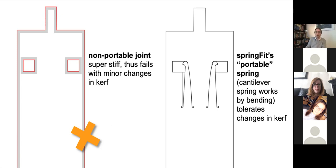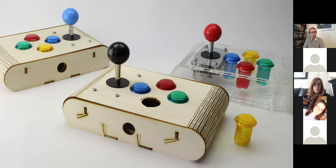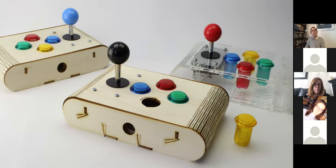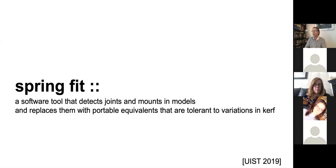The cantilever spring has a range of dimensions for which it will continue to work. We use that principle to convert a series of different types of joints to curve-independent joints, as well as for holding electronics in place. You add a cantilever spring next to the element, and you have enough tolerance — independent of what laser kerf you use, this part is going to fit well inside. SpringFit is the software tool that detects joints and mounts in the models and replaces them with portable equivalents that are tolerant to variations in kerf.